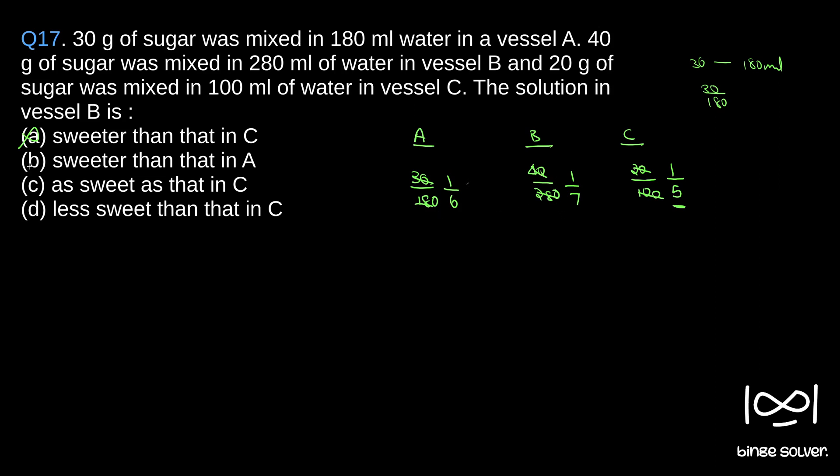Option C says as sweet as in C—no, these are different. Per ml they have different amounts of sugar in it, so as sweet as in C is also wrong. Only option left is D, so that is our correct answer: less sweet than in C. That is true.